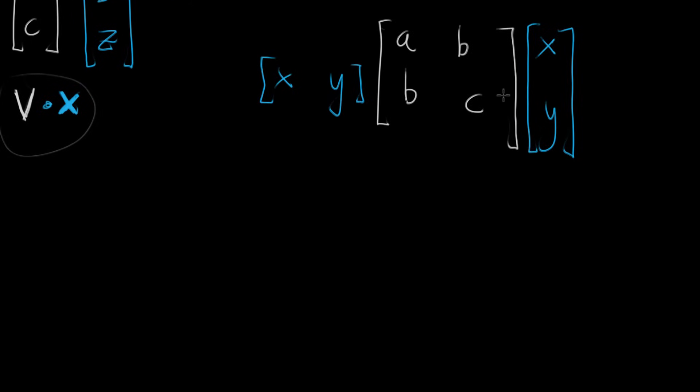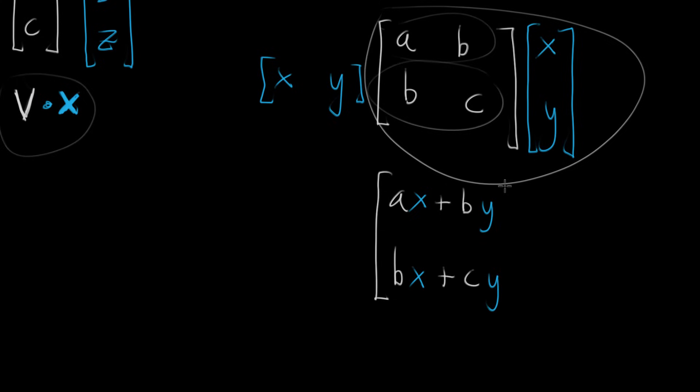So going about computing this, first let's tackle this right multiplication here. We have a matrix multiplied by a vector. Well, the first component that we get, we're going to multiply the top row by each corresponding term in the vector. So it'll be a times x, a times x, plus b times y, plus b times that second term y. And then similarly for the bottom term, we'll take the bottom row and multiply the corresponding term. So b times x, b times x, plus c times y, c times y. So that's what it looks like when we do that right multiplication.